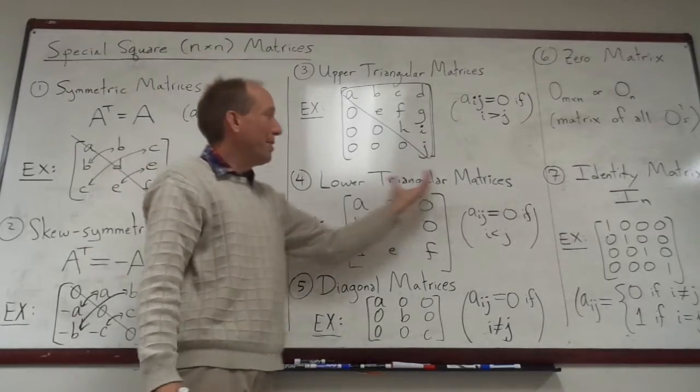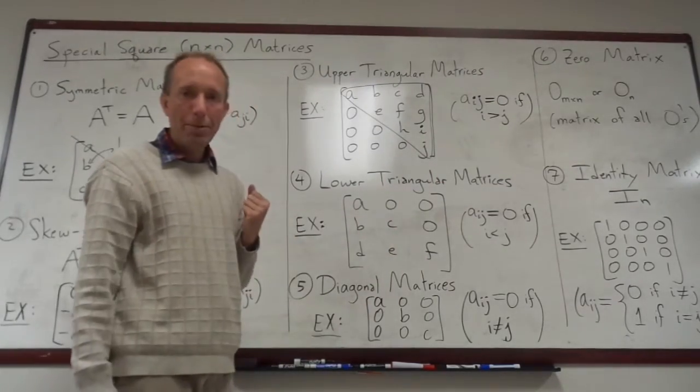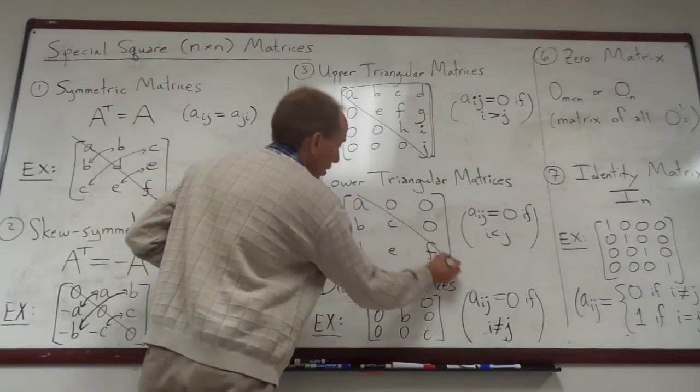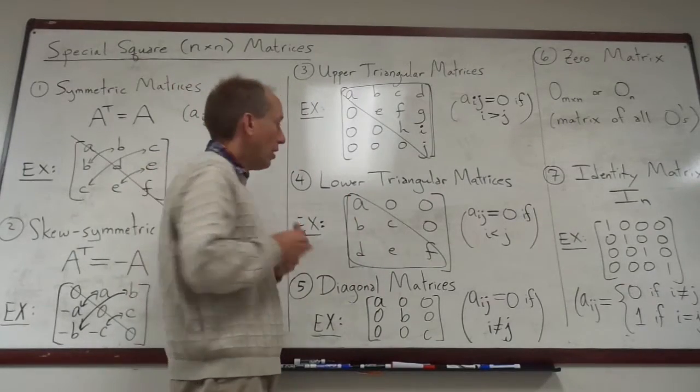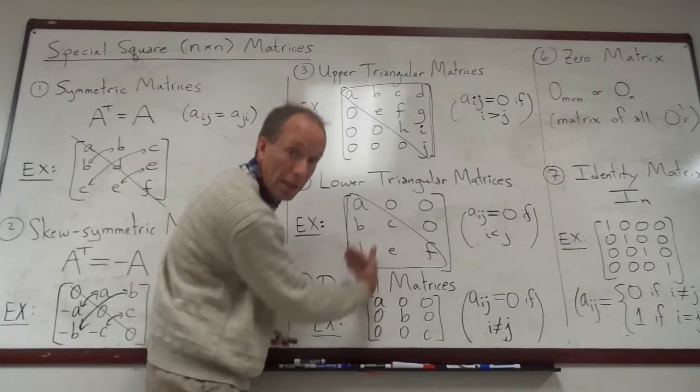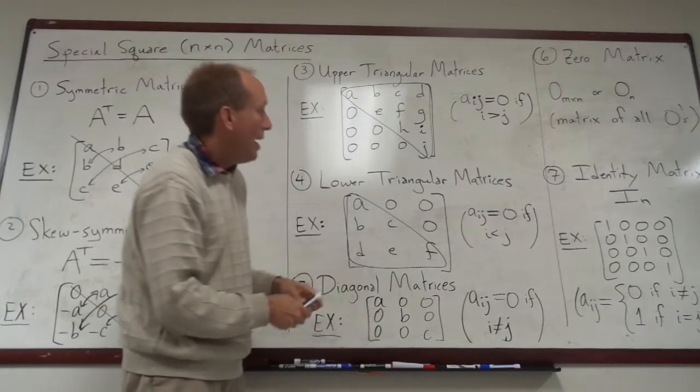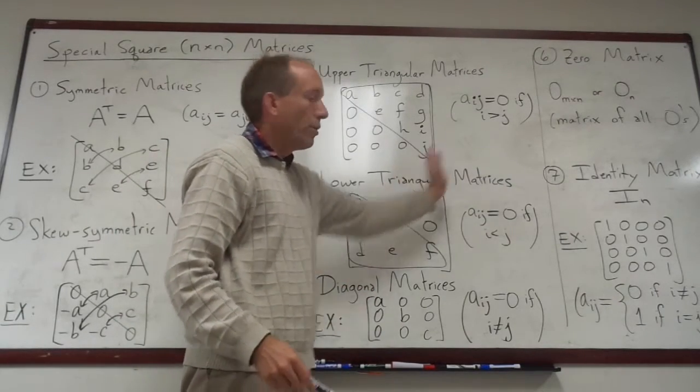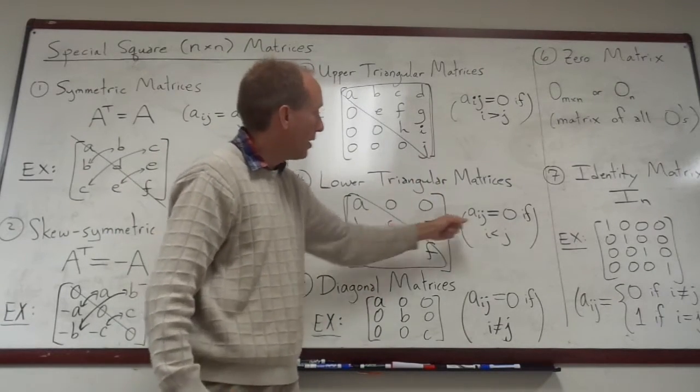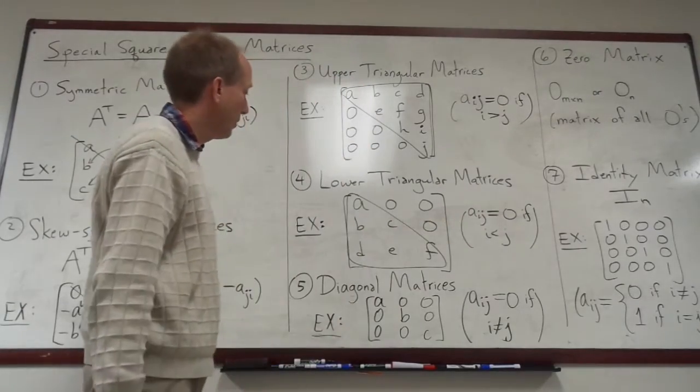Lower triangular matrices. I drew a three by three example. It's the opposite. Now all of the entries that are free are on or below the main diagonal. And the entries to the northeast or above the main diagonal must be zero in this case. All right.